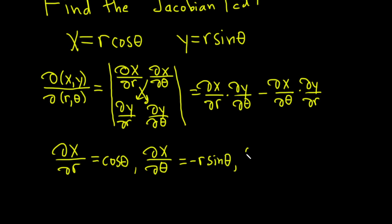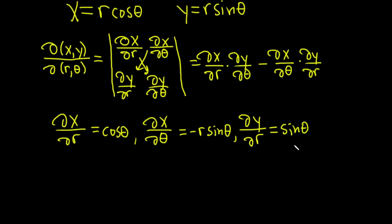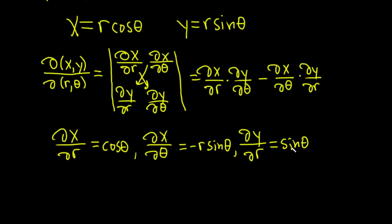Then we can do del y del r. Same thing. The sine theta is a constant and the derivative of r is 1. So this will be simply sine theta. And then the last one will be del y del theta. The r is a constant in this case, so it's r cosine theta.